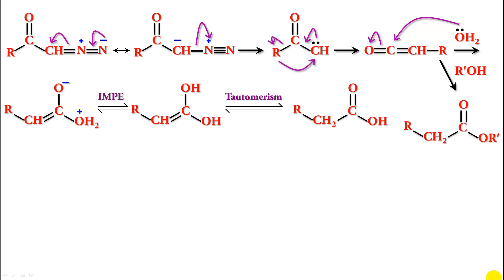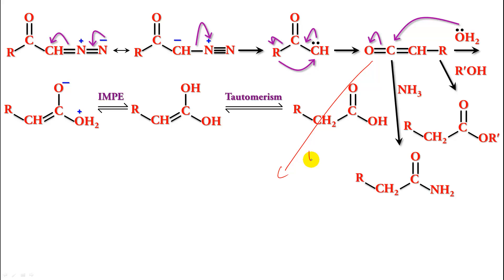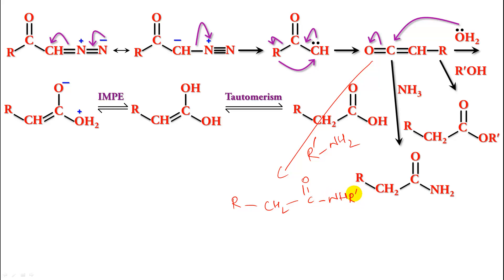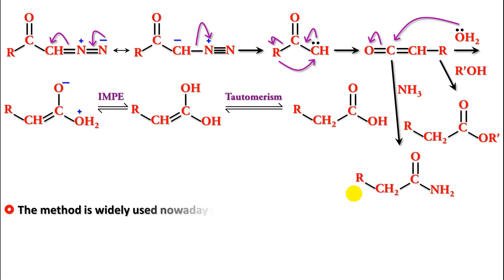If we treat the ketene with ammonia, we get an amide. If we treat it with a primary amine R′NH₂, then we get RCH₂CONHR′ — an N-substituted amide. So this is basically the Arndt-Eistert synthesis.